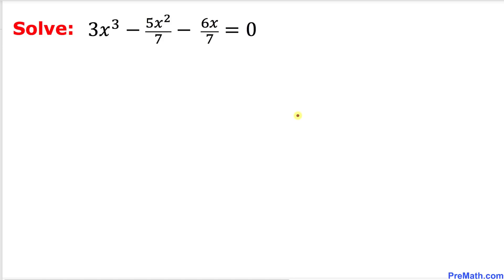Welcome to pre-math. In this video tutorial we are going to solve this given cubic equation as you can see over here. Here's our cubic equation: 3x³ minus 5x² divided by 7 minus 6x divided by 7 equals 0.